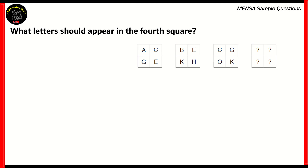Now let's look at another question. This one has a letter series. We need to find out which letters should appear in the fourth square. There is a set of four squares, each subdivided into four parts, with letters in the first three squares. At first glance, you have A, C, E, G in the first square; B, E, H, K in the second; and C, G, K, O in the third — they are not exactly obviously related.